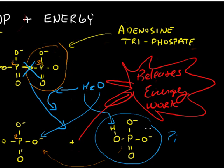By adding this phosphate onto, say, a protein molecule, we can change the shape of that protein molecule and that causes work to happen.